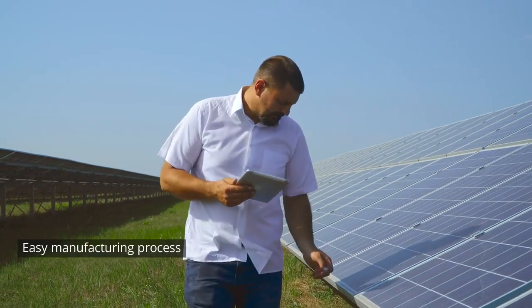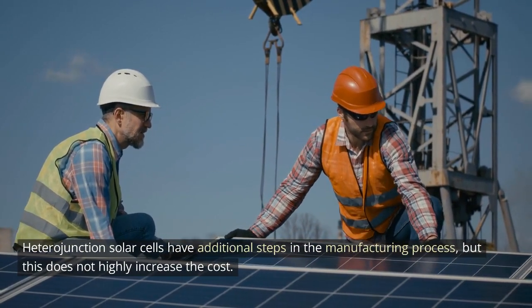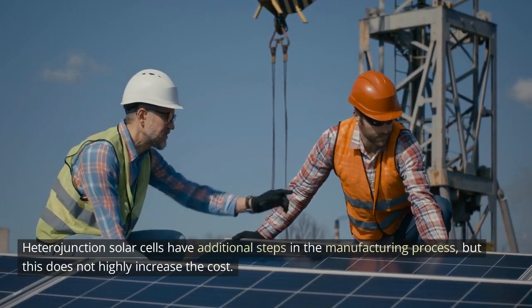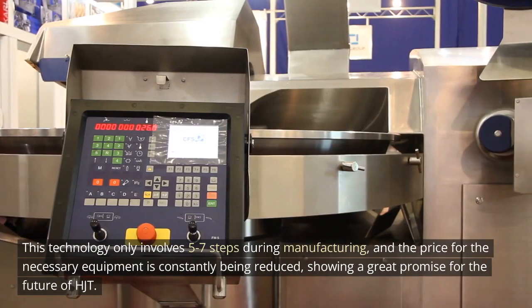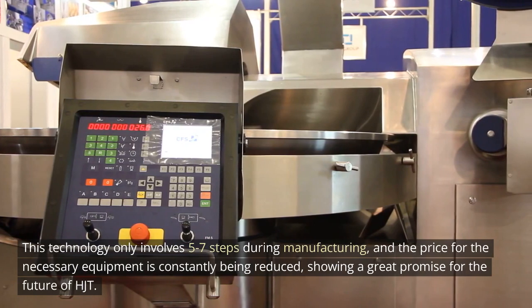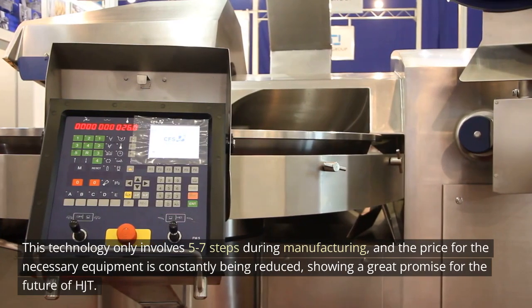Easy manufacturing process. Heterojunction solar cells have additional steps in the manufacturing process, but this does not highly increase the cost. This technology only involves five to seven steps during manufacturing, and the price for the necessary equipment is constantly being reduced, showing great promise for the future of HJT.